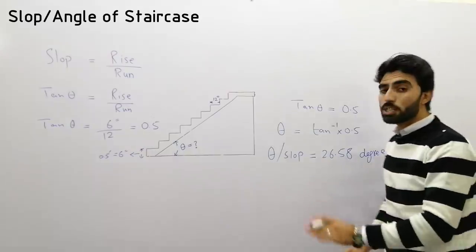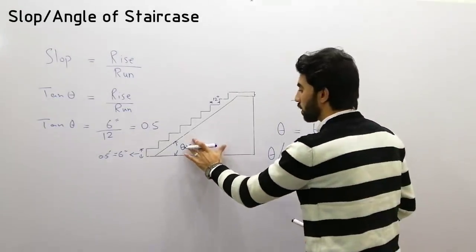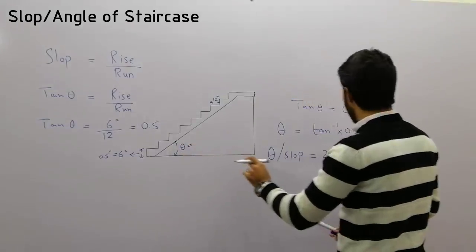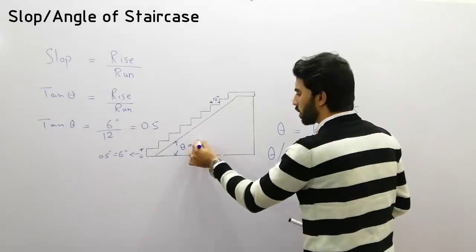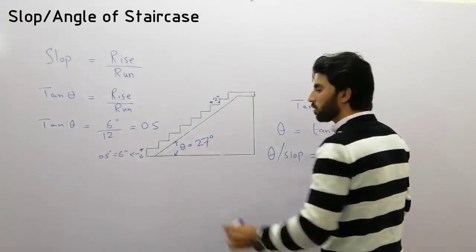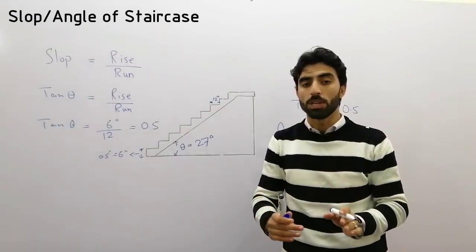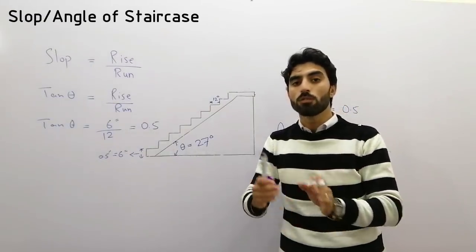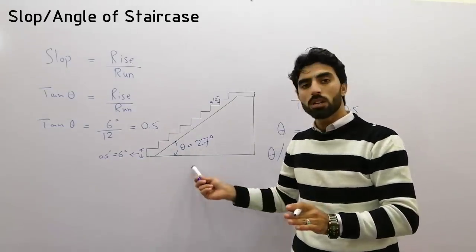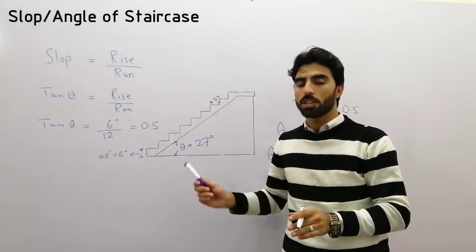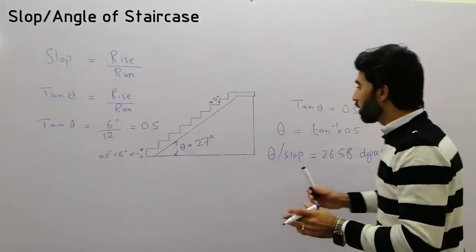This is the easy way to find the angle or slope of a staircase. The result is 26.58 degrees, or approximately 27 degrees. Remember that the angle for a staircase should be between 25 to 40 degrees.